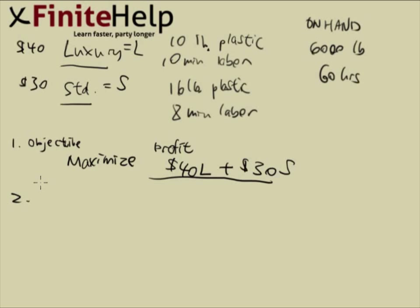Next we can find out the formulas. This is a resource problem - we're going to give each resource its own equation. We're going to have a plastic equation and a labor equation. We'll put L and S on top. L requires 10 pounds of plastic and 10 minutes of labor, and S requires 16 pounds of plastic and 8 minutes of labor.